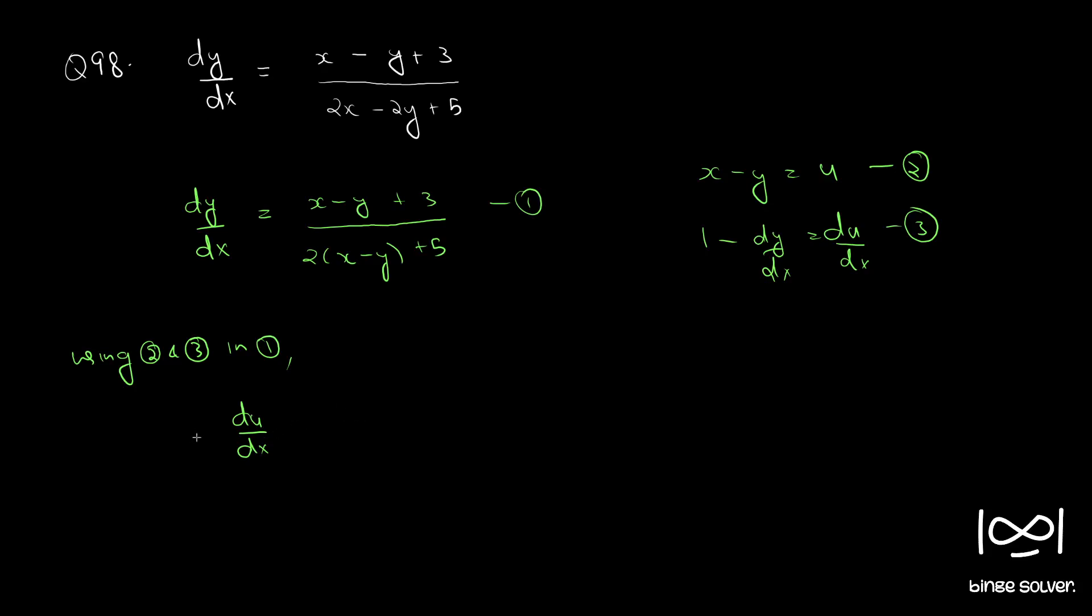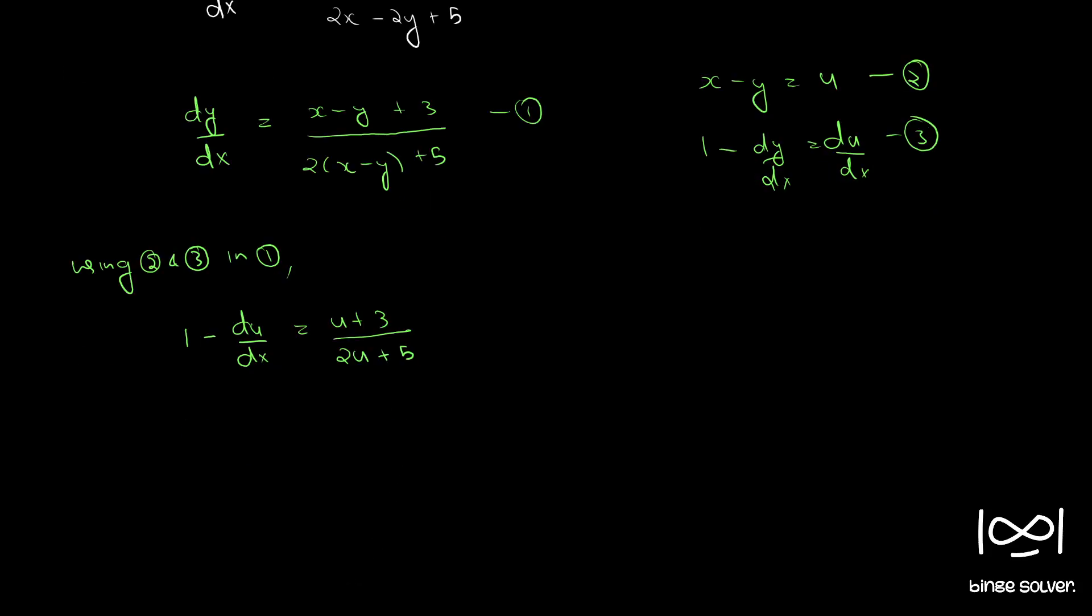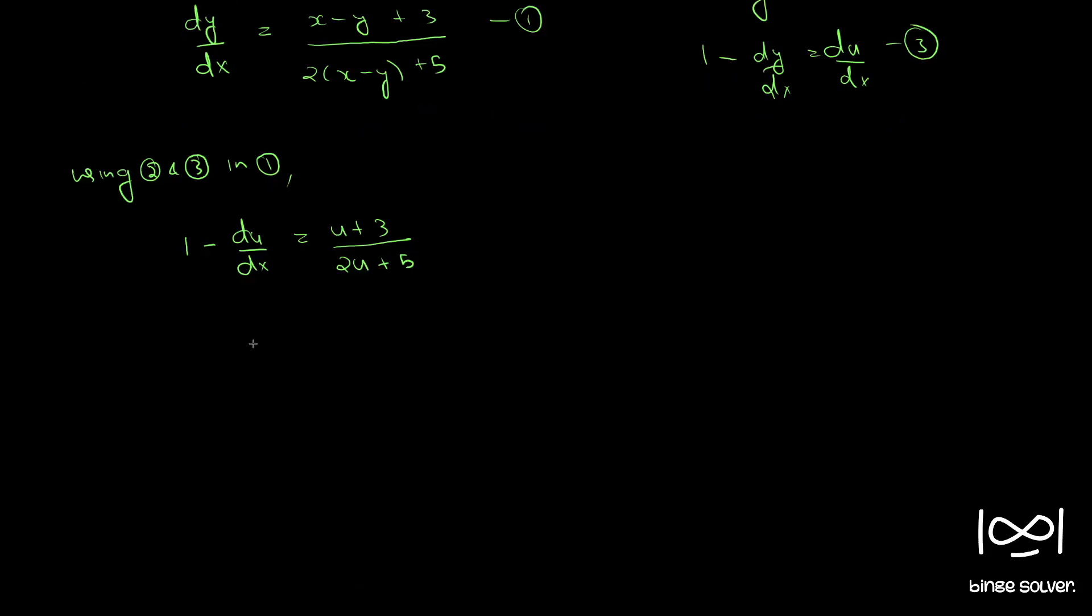1 minus du by dx equal to u plus 3 by 2u plus 5.